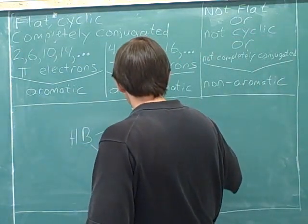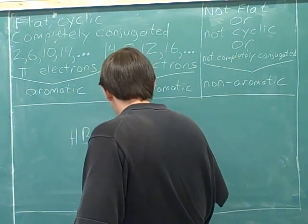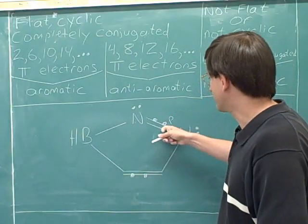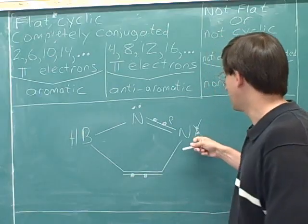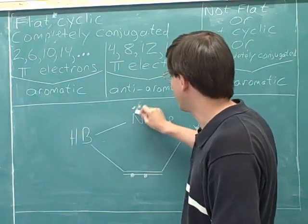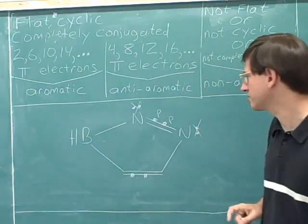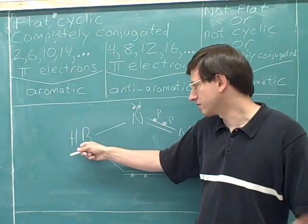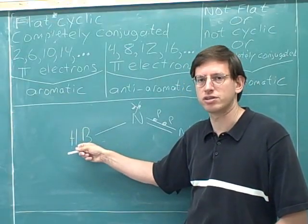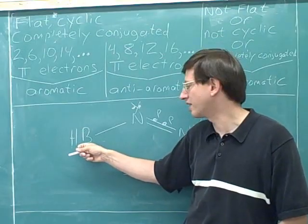This pi bond has two pi electrons. This pi bond has two pi electrons. This nitrogen has already used its p orbital for the pi bond, so these cannot be pi electrons. This nitrogen has already used its p orbital for the pi bond, so these cannot be pi electrons. And there's no lone pair over here, so the p orbital over here is empty, so there's no pi electrons on this boron either.